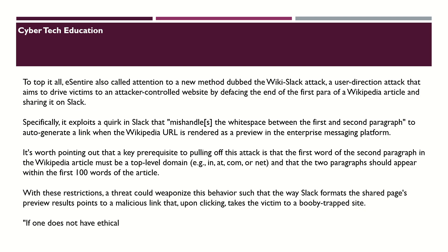Specifically, this exploits a quirk in Slack that mishandles whitespace between the first and second phase, auto-generating a link where the Wikipedia URL remains as a preview in the enterprise messaging platform. A key prerequisite is that the first word of the second phrase in the Wikipedia article must be a top-level domain such as .in, .com, or .net, and the two phrases must appear within the first 100 words of the article. This allows attackers to weaponize Slack's formatting and page preview to redirect victims to a malicious link.